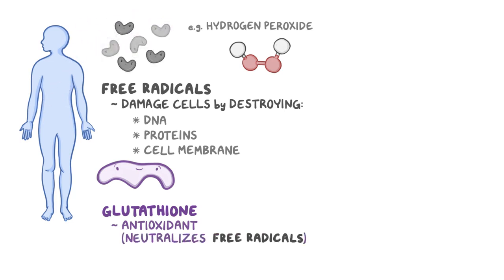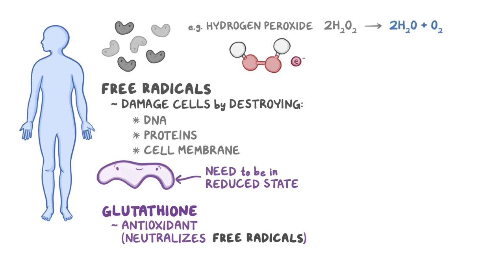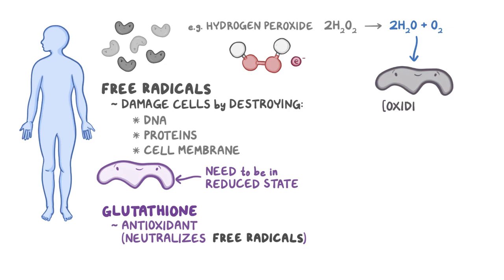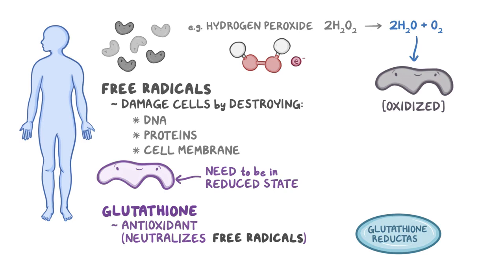In order to function, these molecules need to be in the reduced state, where they can donate an electron to the H2O2 and convert them into harmless water and oxygen. However, this causes the glutathione to become oxidized, so before it can get back to work, an enzyme called glutathione reductase will use an NADPH as an electron donor and reduce the oxidized glutathione back into its working state. After giving up its electron, the NADPH will become NADP+.